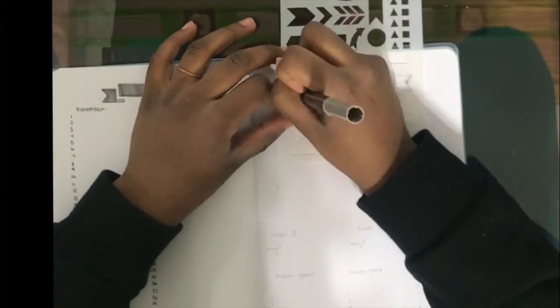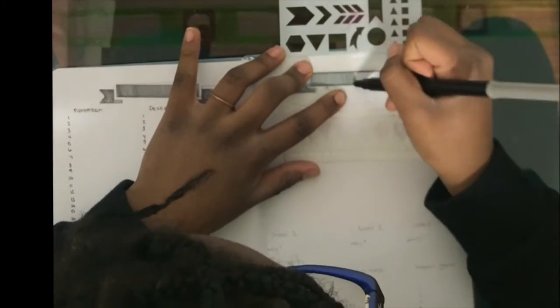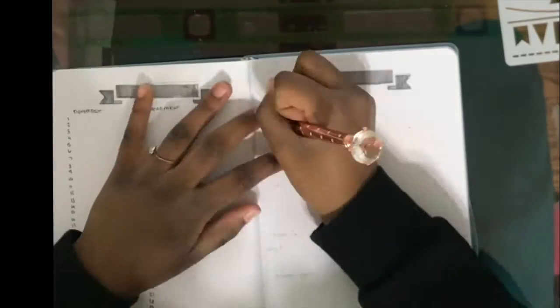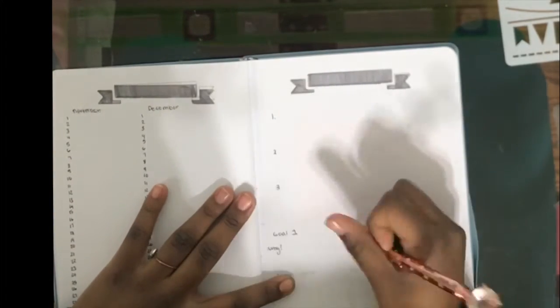Next is my goals page. I decided to make three goals and kind of break them down into smaller goals and say why I wanted to reach those goals so that I wasn't just making goals just to make goals.